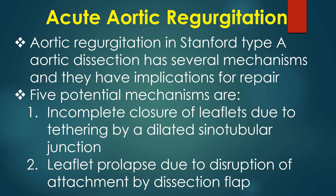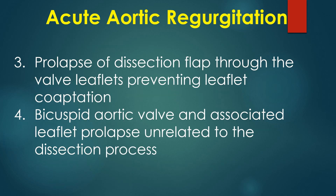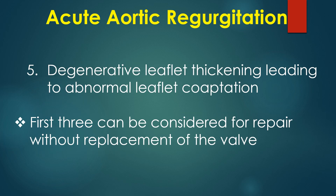Aortic regurgitation in Stanford type A aortic dissection has several mechanisms with implications for repair. Five potential mechanisms are: 1. Incomplete closure of leaflets due to tethering by a dilated sinotubular junction; 2. Leaflet prolapse due to disruption of attachment by the dissection flap; 3. Prolapse of the dissection flap through the valve leaflets preventing leaflet coaptation; 4. Bicuspid aortic valve with associated leaflet prolapse unrelated to the dissection process; 5. Degenerative leaflet thickening leading to abnormal leaflet coaptation.